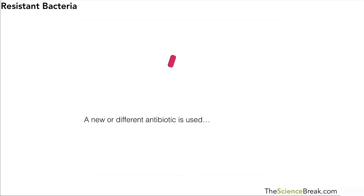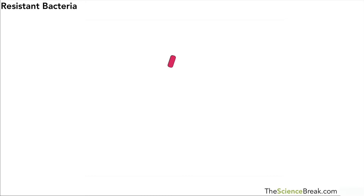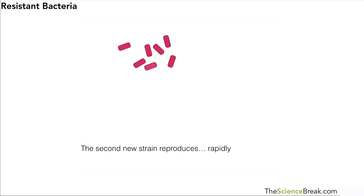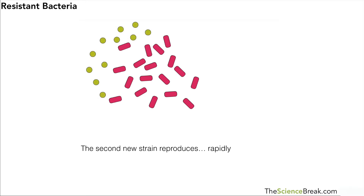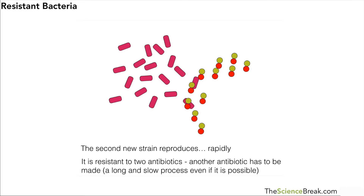However, we have to remember that mutations in the bacteria happen all the time, and we might get some strains that are resistant to the new antibiotic. Therefore, this new strain of bacteria can then begin to reproduce in the body rapidly — as we said, they can double once every 20 minutes. So here we have a new population of this new resistant strain, and even that second antibiotic doesn't have an effect — both antibiotics are no longer able to destroy those bacteria.